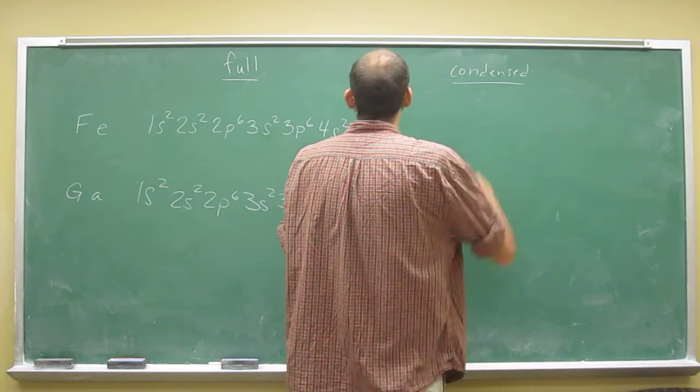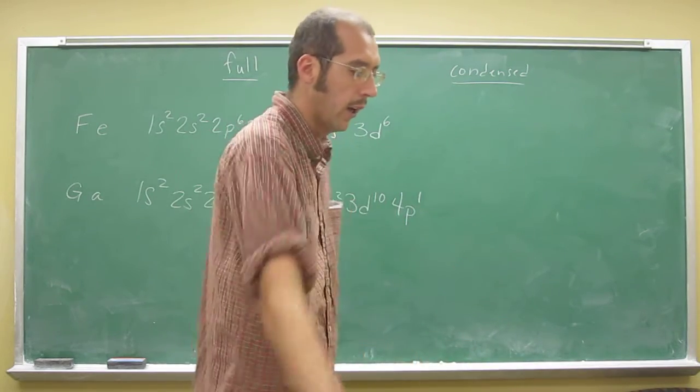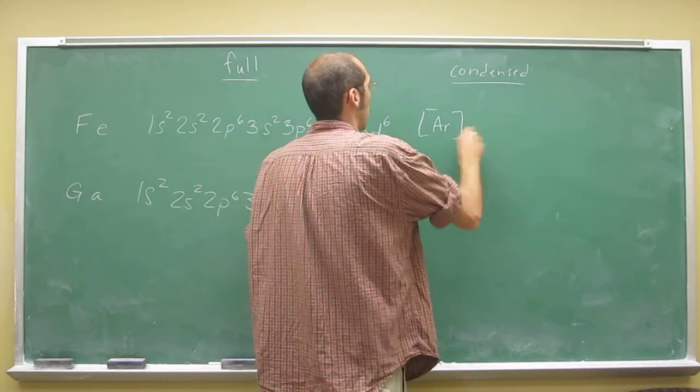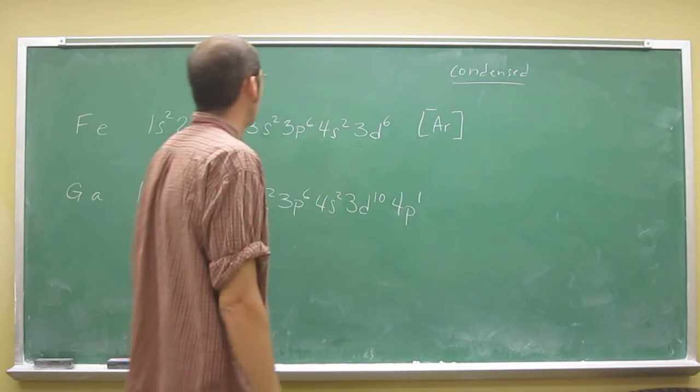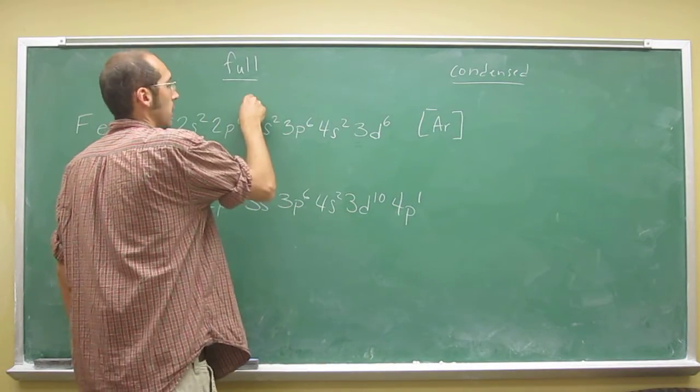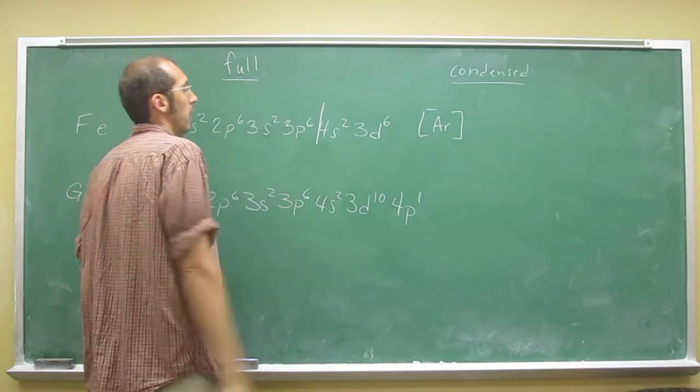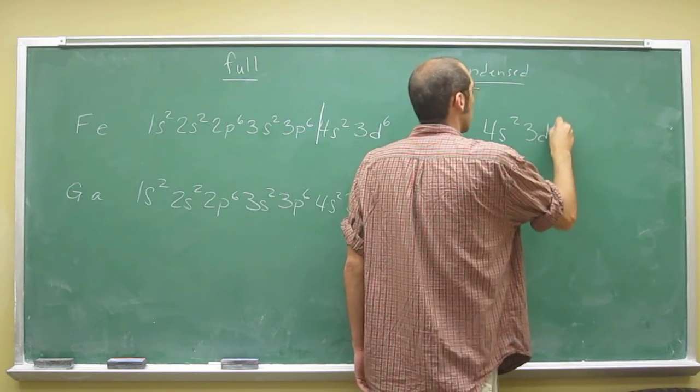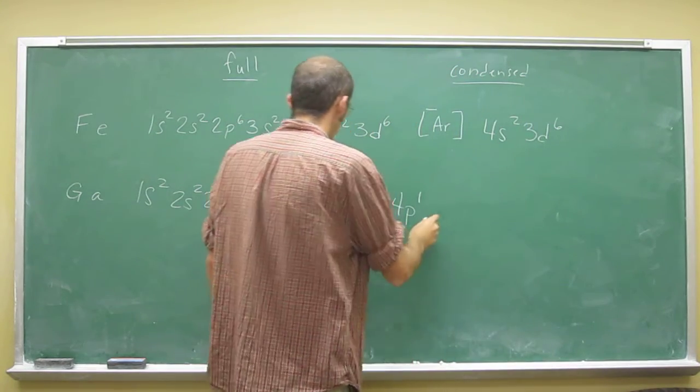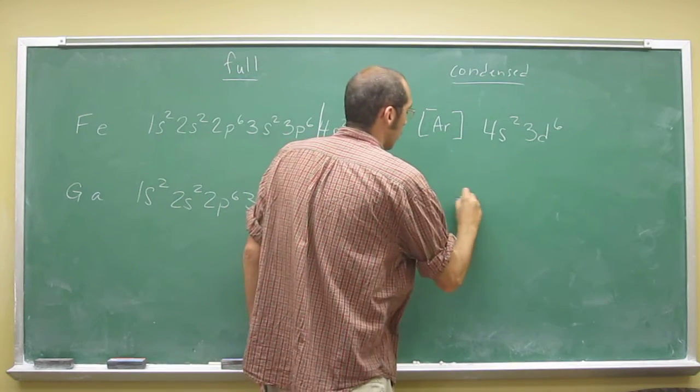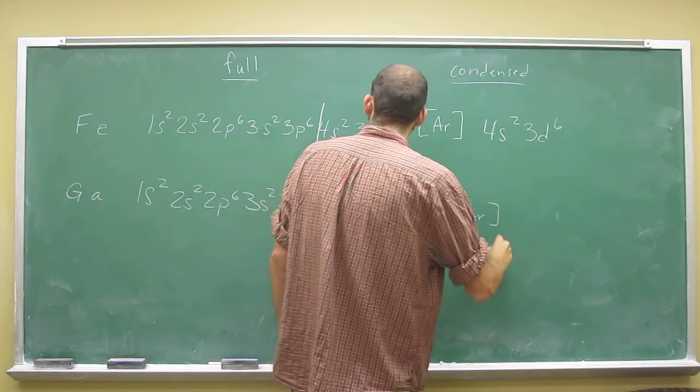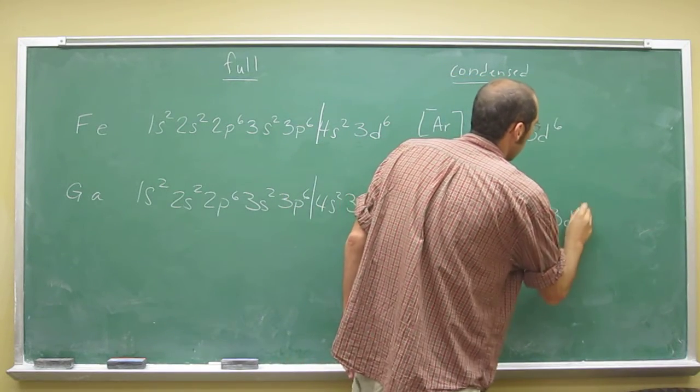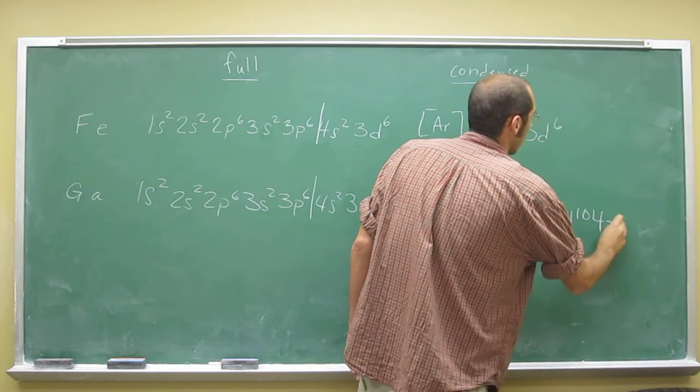Anyways, so condensed electron configuration, you just do the noble gas before it. So that's going to be Ar, and then 4s2, 3d6. And then here it's going to be Ar, 4s2, 3d10, 4p1.